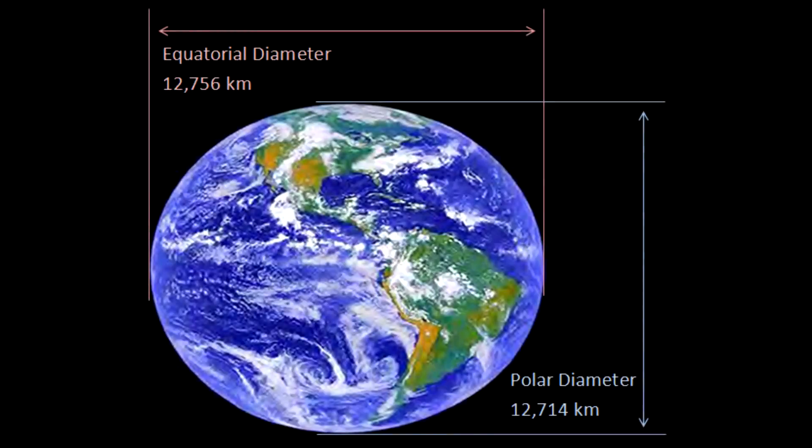Hello, it's Scott Manley here. Today I want to talk about how the tiny amount of oblateness in the Earth's shape can have a profound effect on spacecraft and how in fact we can exploit this for good.